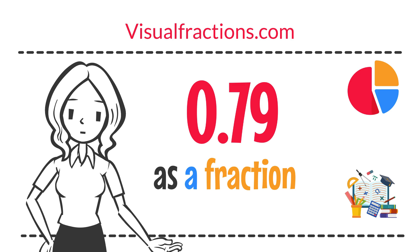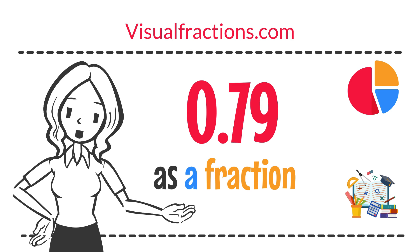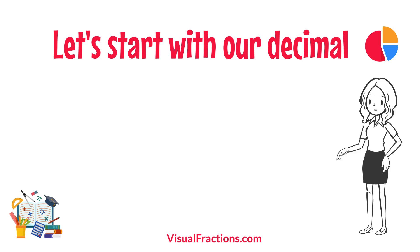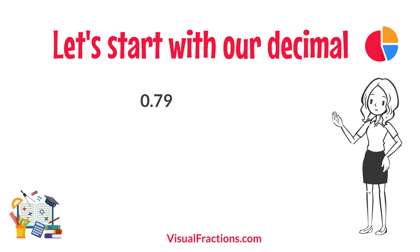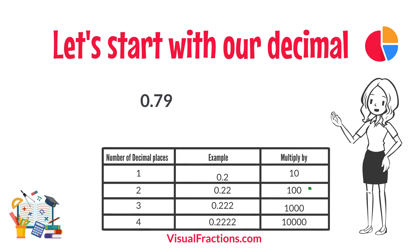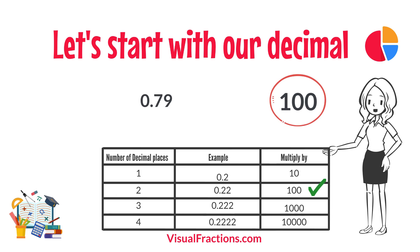Welcome to Visual Fractions. Today we're diving into how to convert the decimal 0.79 into a fraction. Let's start with our decimal: 0.79. Notice there are two digits to the right of the decimal. This places it in the hundredths position.